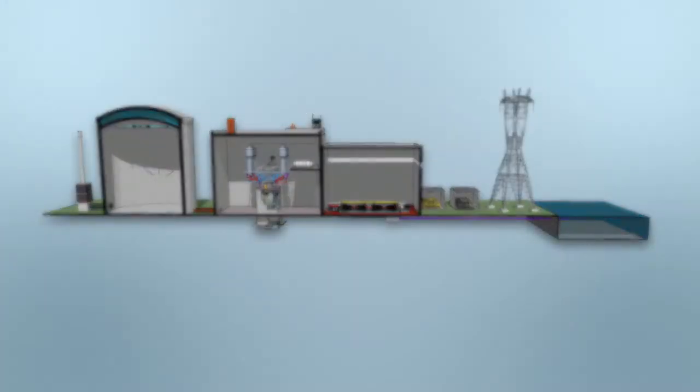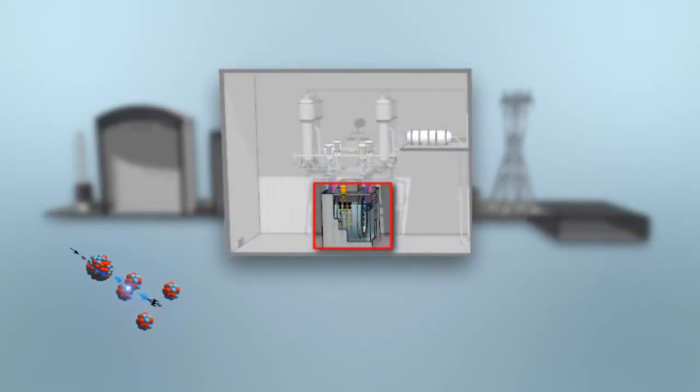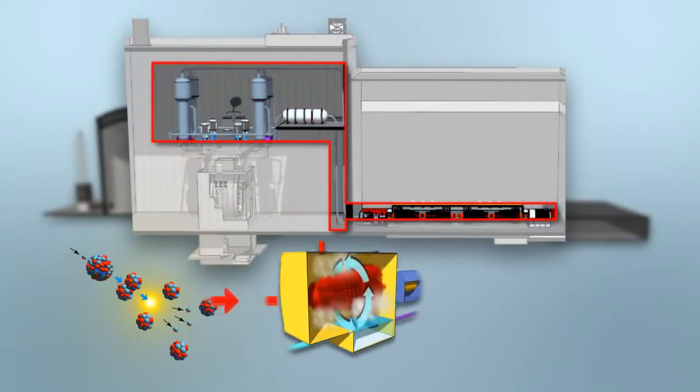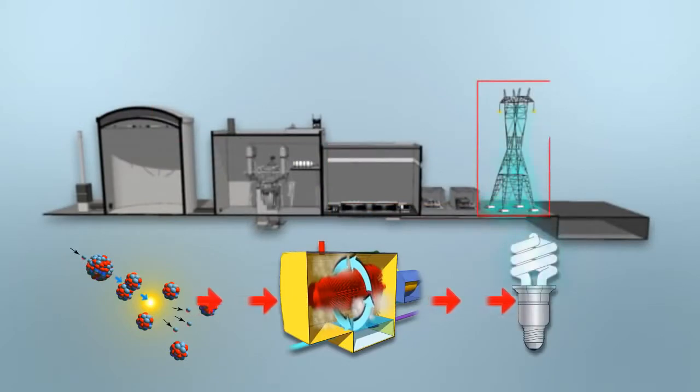CANDU reactors produce electricity by splitting atoms of natural uranium to create heat. The heat is then used to make steam to power the turbines and generators, which produce electricity.